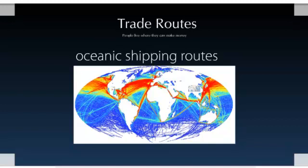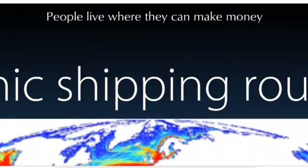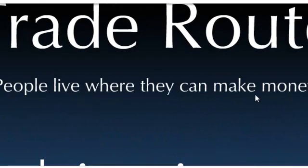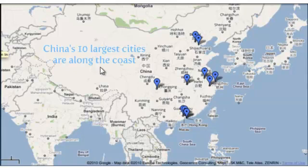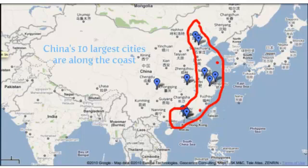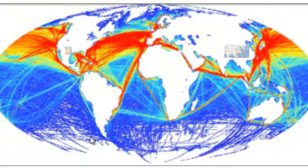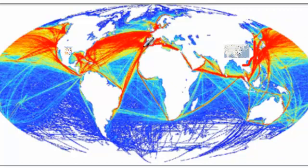Trade routes are very influential in the settlement of people because people choose to live where they can make money. Speaking of business and trade, let's look at China's 10 largest cities — most of them are along the coast. Take a look at a world map of shipping routes: overseas shipping routes are concentrated right along China's coast, just about as busy as between Europe and North America. People are living there because they want access to all these goods and services flowing in and out of China.